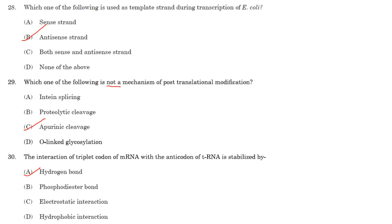Which one of the following is used as the template strand during transcription in E. coli? The template strand is the antisense or non-coding strand. The sense strand is the non-template strand. The template strand is the one that RNA polymerase uses as the basis to build the RNA, and it is usually the antisense or non-coding strand.